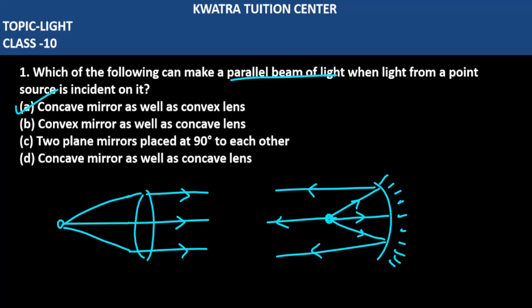In case of convex mirror, you can't obtain. In case of concave lens, you can't obtain that. Plane mirrors case may be possible. And concave mirror as well as concave lens is not possible again. So remember, in case of concave mirror and convex lens, you will be able to get parallel beam of light. Right? So yes, moving on to next question, which is question number two.